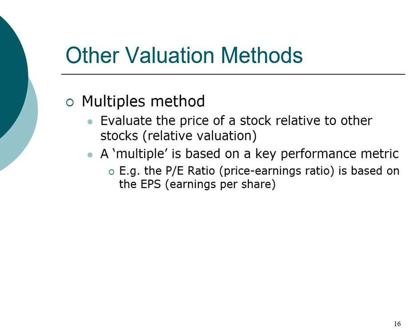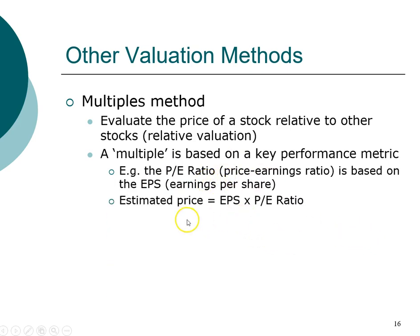The most common multiple is perhaps the PE ratio, which also stands for price-to-earnings ratio. The performance metric this ratio is based on is earnings per share. If you want to use this as the multiple to estimate the price of a stock, you simply take the earnings per share from that particular stock and multiply it by the PE ratio of a peer group of companies — companies that you believe share similar characteristics. This approach is very common in the industry.